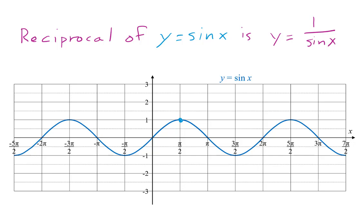To start, here's a point where y equals 1. The reciprocal is 1 over 1, which is 1. So the reciprocal has the same y value as the original function — they both pass through that same point. Next, we look at a point where y equals 1 half. The reciprocal of that, 1 over 1 half, is 2. So for the same x value, we have a y value of 2 on the graph of the reciprocal.